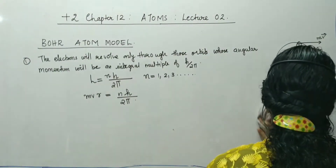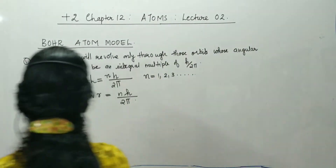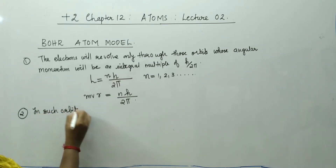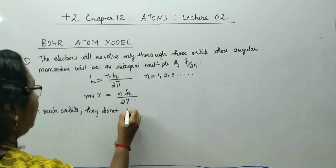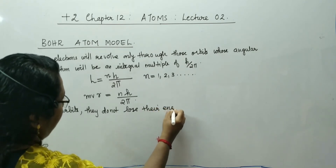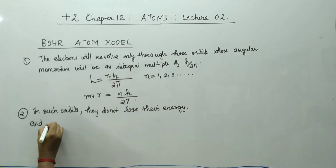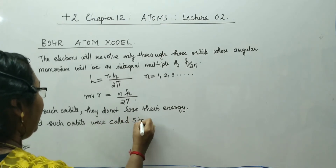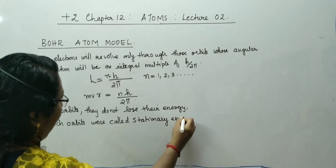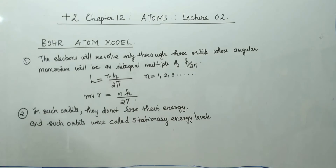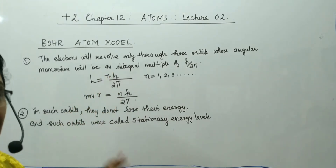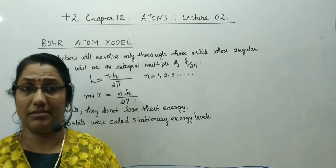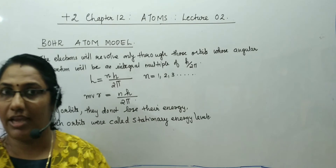What is the speciality of such orbits? The speciality of such orbits is that in such orbits they do not lose their energy. Hence such orbits were called as stationary energy levels. For such orbits whose angular momentum is an integral multiple of h by 2π, they never lose their energy. Stationary means the energy is constant at that orbit.